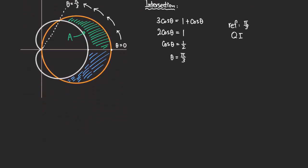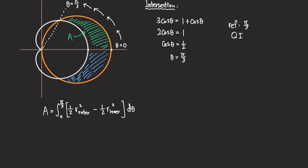We set up the integral to find A. It goes from theta equals 0 to pi over three, and we use the formula: A equals the integral of one half times the outer curve squared minus the inner curve squared d-theta. That is the formula we are going to use.